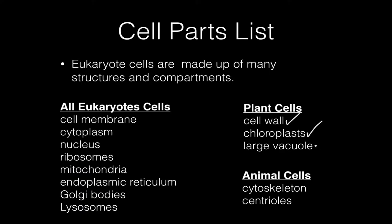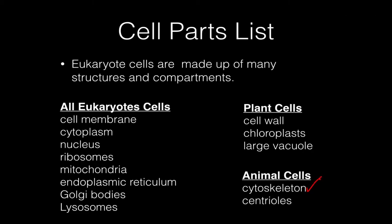If we just focus on plant cells, plant cells have some structures that are either unique to or very obvious in this type of eukaryote cell. For example, the cell wall — all plant cells have a very obvious cell wall and green chloroplasts. They also have a very large central vacuole. We can't say that vacuoles are only found in plant cells; animal cells do have vacuoles, but they're very small and have completely different functions.